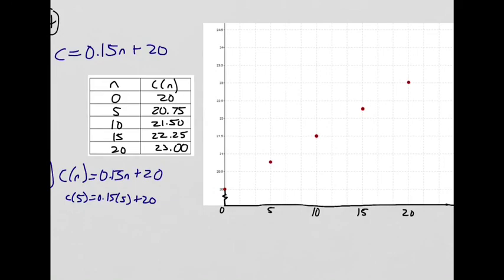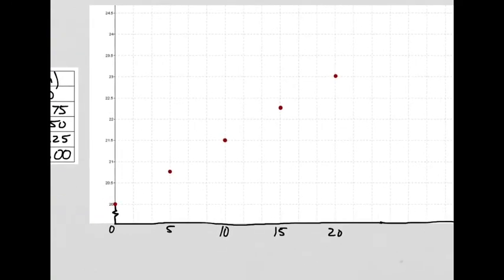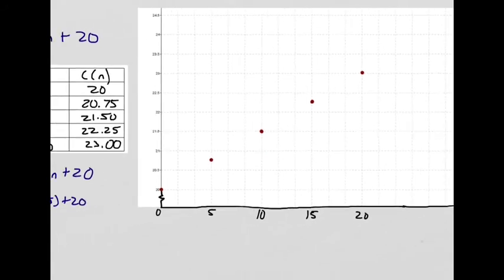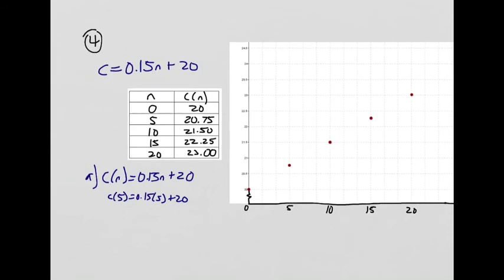Even though the question doesn't ask us to consider this, maybe just for the sake of practice, think about whether this function would be discrete or continuous. Does it make sense to connect these dots? Well, not necessarily, because even though there are values for one text message and two text messages and three text messages and so on, so there is valid information between these dots, there's not valid information between the dots of, say, one text message and two text messages, meaning you could not send 1.35 text messages. Or you could not send eight and a half text messages. You can only send a whole number amount of text messages. So based on that reason, this is discrete data, and we're not going to connect that line.